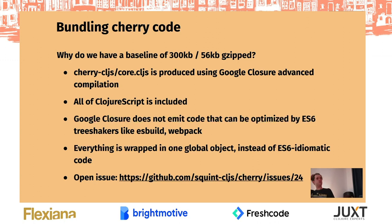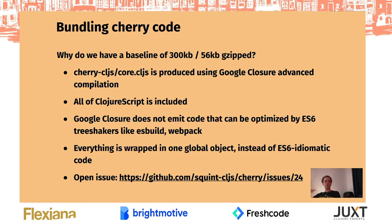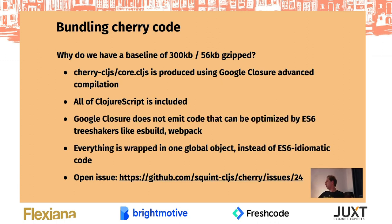Why do we have 300 kilobytes as a baseline? Google Closure compiles ClojureScript per namespace to a global object. ES6 tooling doesn't understand that you're only using some things from this Google global object, so it leaves the whole global object in your JavaScript. There might be a solution to this — there is an open issue with somebody who studied the structure of this global thing and we might be able to rewrite it. This is issue number 24 on the squint-cljs/cherry repository.